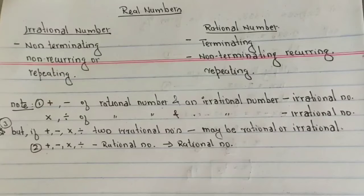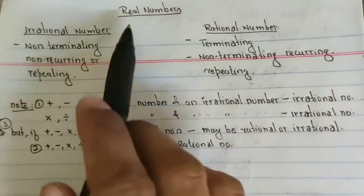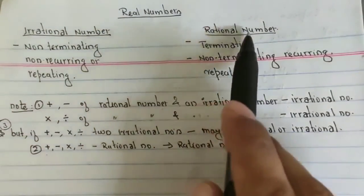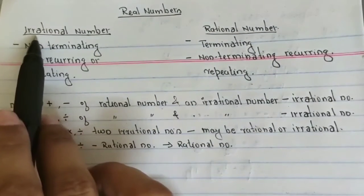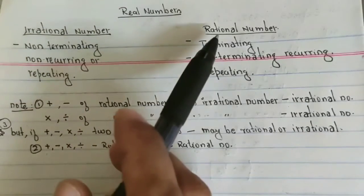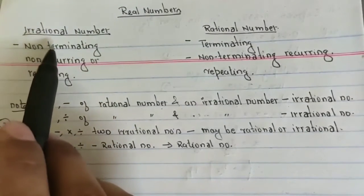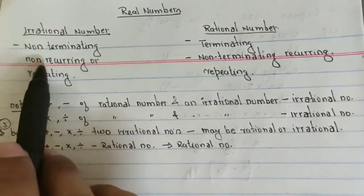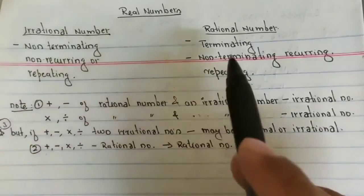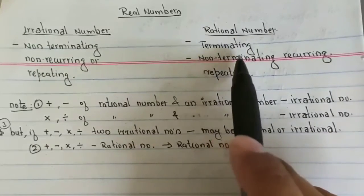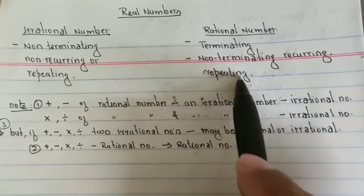Today we will see real numbers, which also come under the number system. Real numbers include irrational numbers as well as rational numbers. We have already discussed how to find which numbers are irrational and which are rational. Irrational numbers are those which are non-terminating and non-recurring. On the other hand, rational numbers are terminating or non-terminating but recurring.